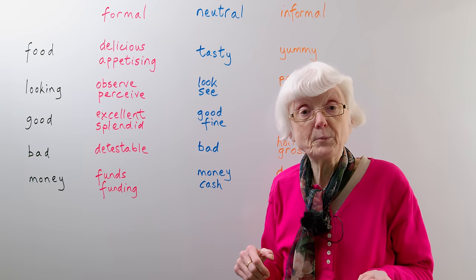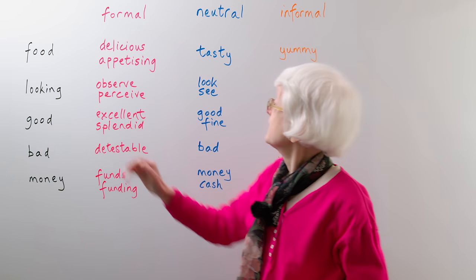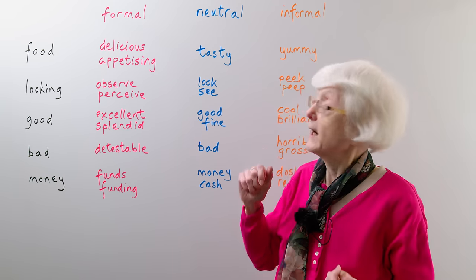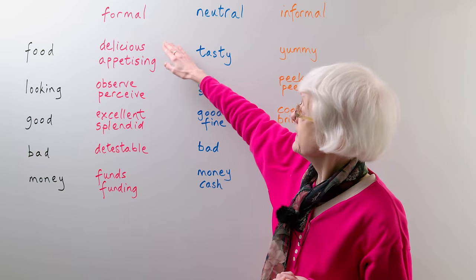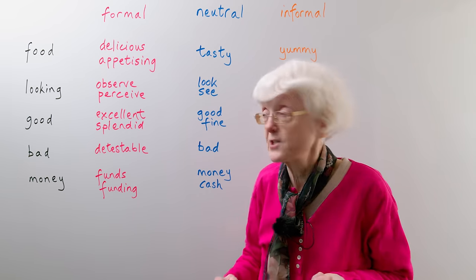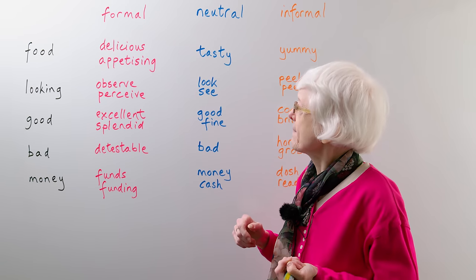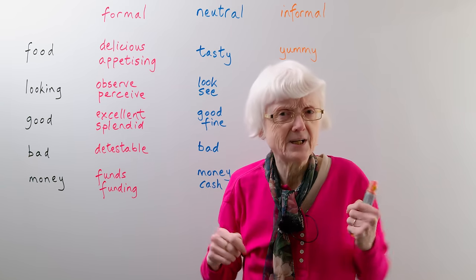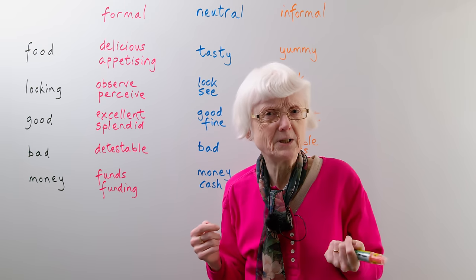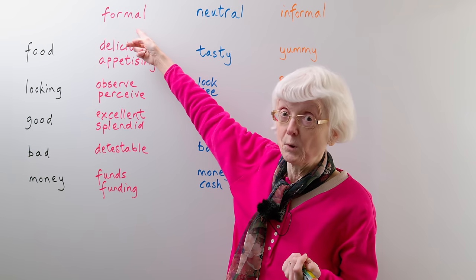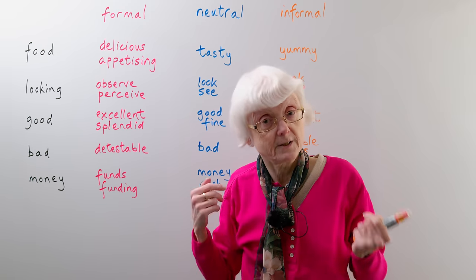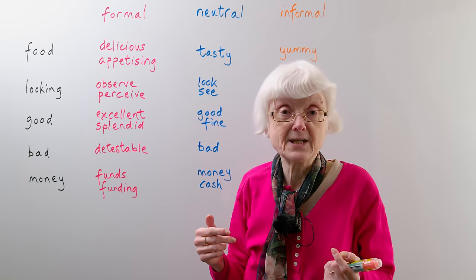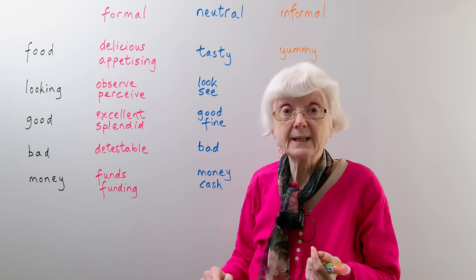Let's look at some examples. With food, if you want to describe the food and you're enjoying it, you like it and it tastes good, how would you describe it? In a formal way, you might say it's delicious or appetising. If you were with friends in a restaurant and you said 'oh, this food is very appetising,' your friends might think that's a strange word to use. Formal words are not the kind you would use in a conversation with friends, so you have to be careful about context. You might only use them in writing rather than speaking.